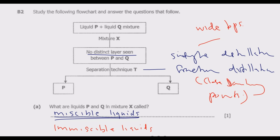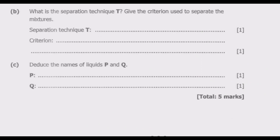Either of these will be correct because we are not told whether they have close boiling points or wide boiling points. So the best answer would be distillation techniques. You can go with fractional distillation or simple distillation and both will still be correct. If you say distillation techniques, this covers both simple distillation and fractional distillation.